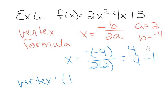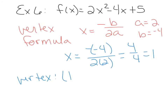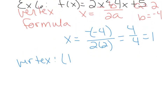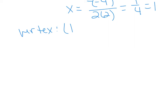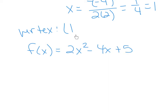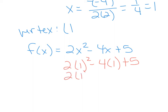The formula only tells us the x-coordinate. To find the y-coordinate, you plug it back into the function and evaluate. The function was f(x) equals 2x squared minus 4x plus 5, substituting 1 for x: 2 times 1 squared minus 4 times 1 plus 5. Remember order of operations — square before you multiply — so 1 squared is 1, giving 2 times 1 minus 4 plus 5, which is 2 minus 4 plus 5, equals 3. So the vertex has a y-coordinate of 3.